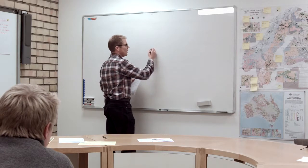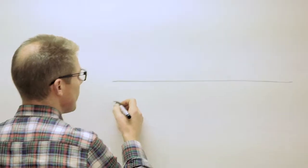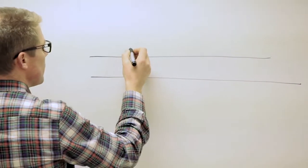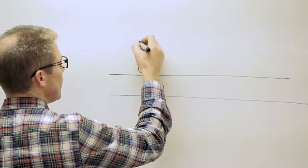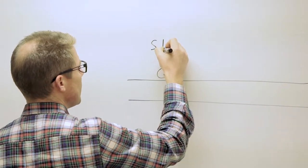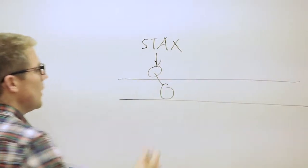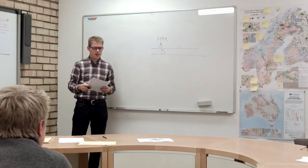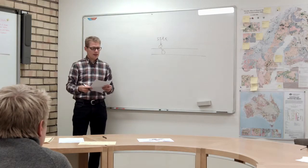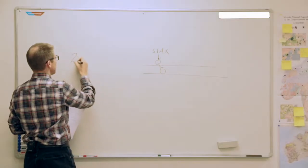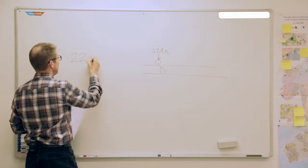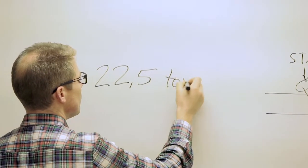I'll draw a railroad here. It's the max axle load, it's called STAX, and that's a limitation. A normal max axle load is 22.5 tons per axle.